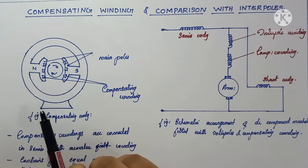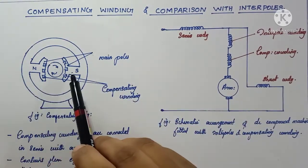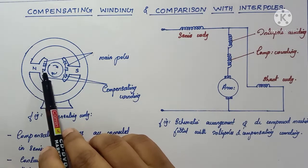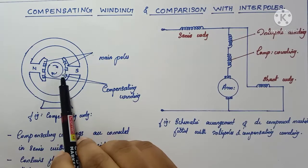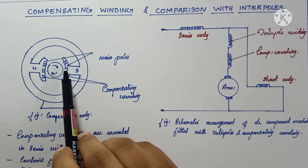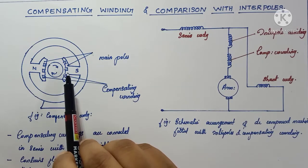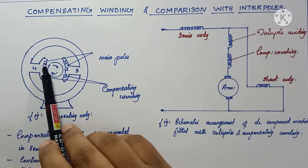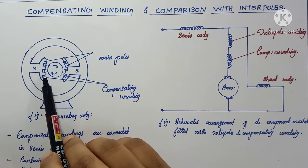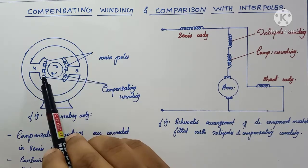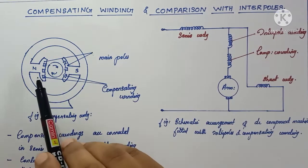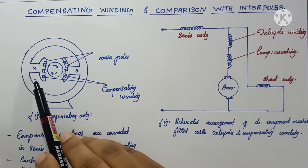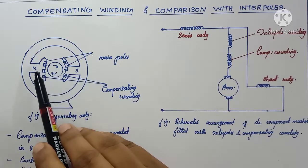In this figure you can see a two-pole machine. In the slots of the machine you can see cross and dot portions indicating compensating windings. These compensating windings are embedded or placed in the slots of the main poles — specifically on the pole faces, which is the tip of the main pole.